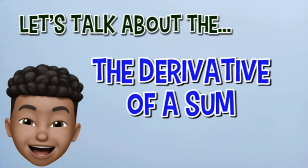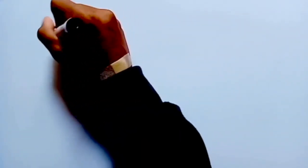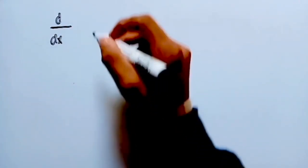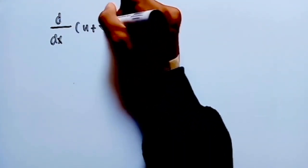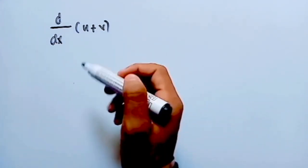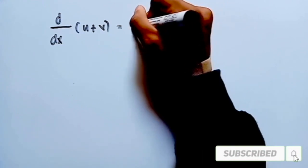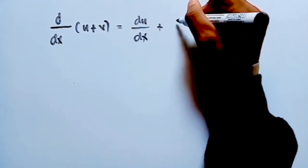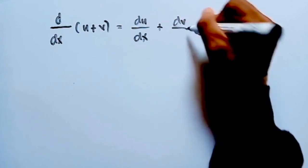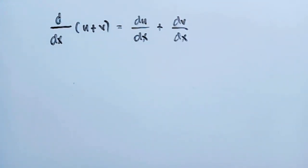So the formula is: d over dx of the function u plus v — that is, d over dx of (u + v) — is equal to du over dx plus dv over dx. So let's try some problems using this formula.